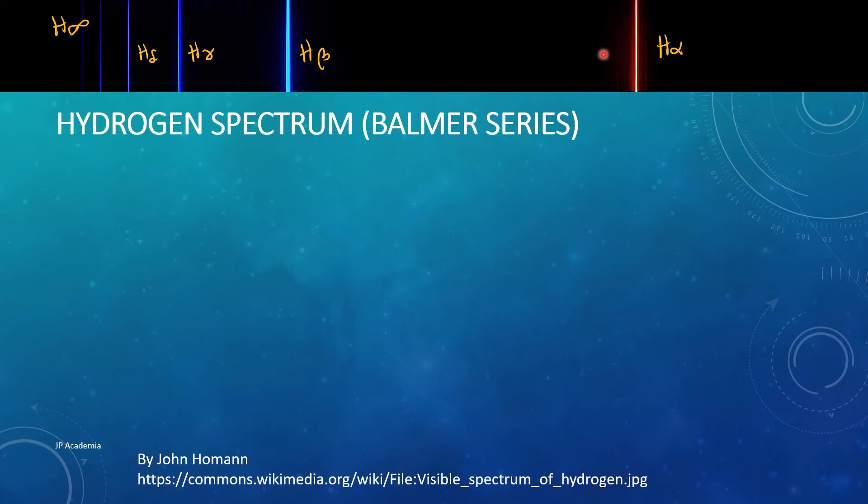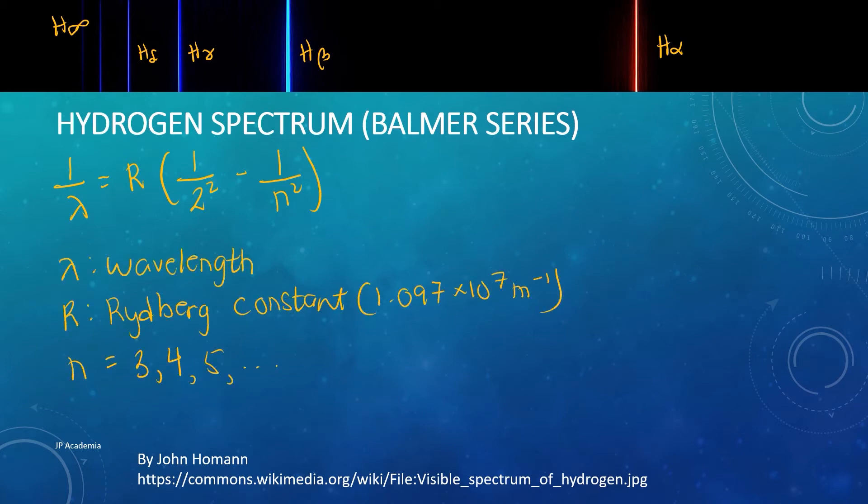but are considered to be ultraviolet as they have wavelengths less than 400 nanometers. Johan Balmer, through trial and error, found a formula that gives the wavelength of these lines called the Balmer series. So this is the equation wherein we have the lambda here, refers to the wavelength, R is the Rydberg's constant, and your n is just an integer from 3, 4, 5, and above. If your n is equal to 3, we get the wavelength of the H-alpha, while if the value of n is infinity, we get the smallest wavelength.